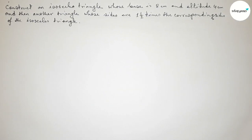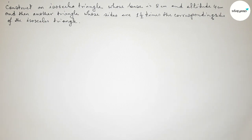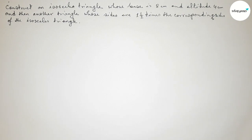Hi everyone, welcome to SI Share Classes. Today in this video we have to construct an isosceles triangle whose base is 8 centimeters and altitude is 4 centimeters, then construct another triangle whose sides are 1 and 1/2 times the corresponding sides of the given isosceles triangle. Please watch the video till the end. Let's start.